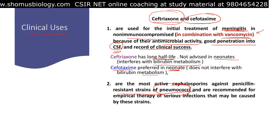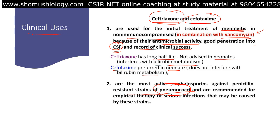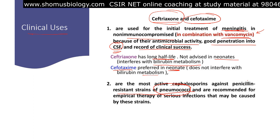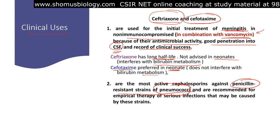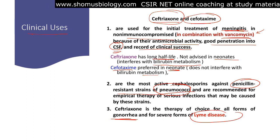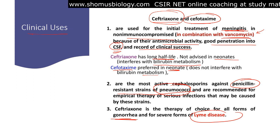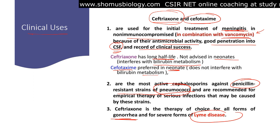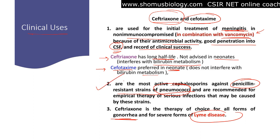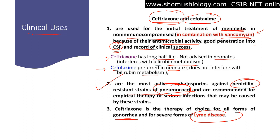Ceftriaxone and cefotaxime are most effective against penicillin-resistant strains of pneumococci and are recommended for empirical therapy of serious infections caused by these strains. If penicillin resistance is found in pneumonia cases, ceftriaxone or cefotaxime can be used. Ceftriaxone is also the therapy of choice for all forms of gonorrhea and several forms of Lyme disease, which is caused by tick bites.